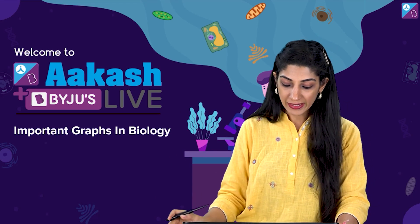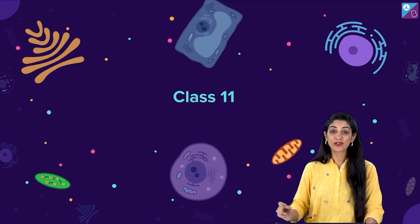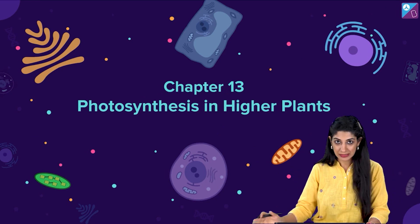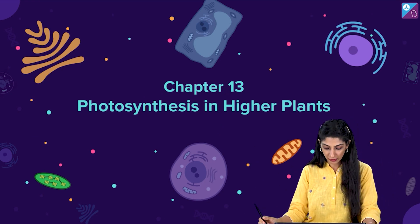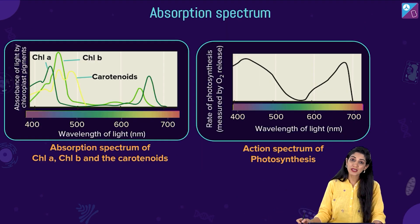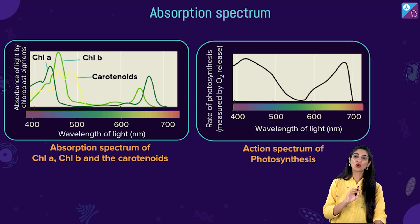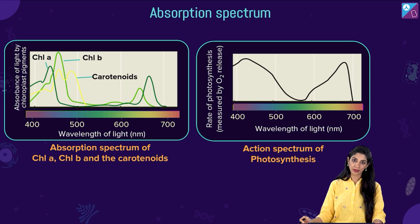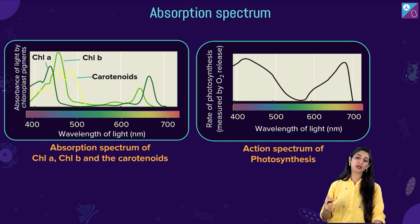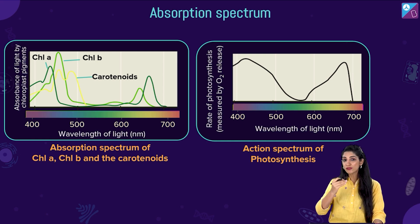For Class 11th, in the chapter 'Photosynthesis in Higher Plants' — chapter 13 under plant physiology — the most important graph is the action and absorption spectrum of chlorophyll pigments. We talk mainly about chlorophyll A and chlorophyll B because there is a lot of overlapping. You should know clearly what is the absorption spectrum and what is the action spectrum. Absorption spectrum tells us how much energy chlorophyll pigments absorb at different wavelengths of visible light (VIBGYOR).